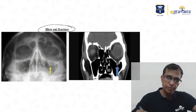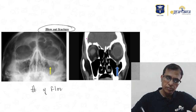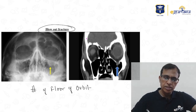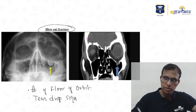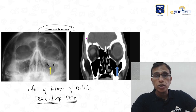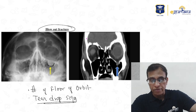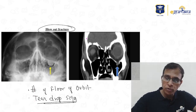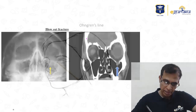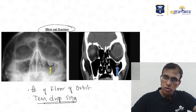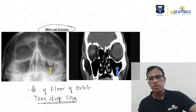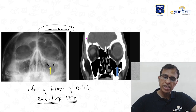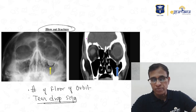This is a blowout fracture — a fracture of the floor of the orbit. The CT scan shows the teardrop sign: the orbital floor is fractured and the tissue of the orbit is hanging down like a teardrop from the eye.